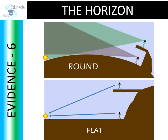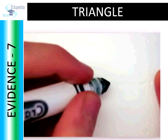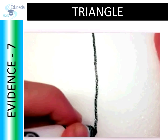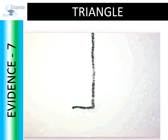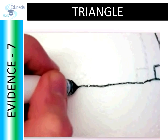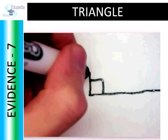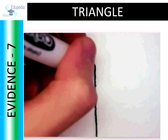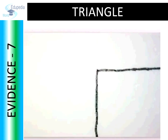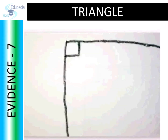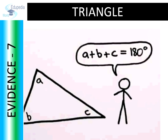Evidence 7: The Right Angle Triangle. If you move in a straight line on the Earth for a long enough distance, say 1,000 km, then turn right at 90 degrees, walk in the same direction for the same distance, then turn again to the right at 90 degrees and walk again the same distance, you would be surprised to find yourself back at the starting point. The triangle thus formed will measure 270 degrees, which is not possible on a flat surface.